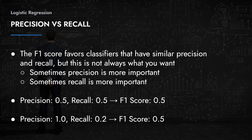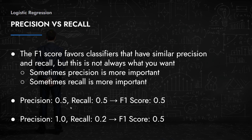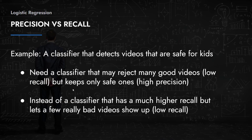Here's a quick example: a model with precision 0.5 and recall 0.5 gets an F1 score of 0.5. A model with very high precision but very low recall also amounts to an F1 score of 0.5. So even though the second model has a very high precision, it scores the same as the balanced model. This is why understanding when to use F1 versus focusing on precision or recall specifically is important.